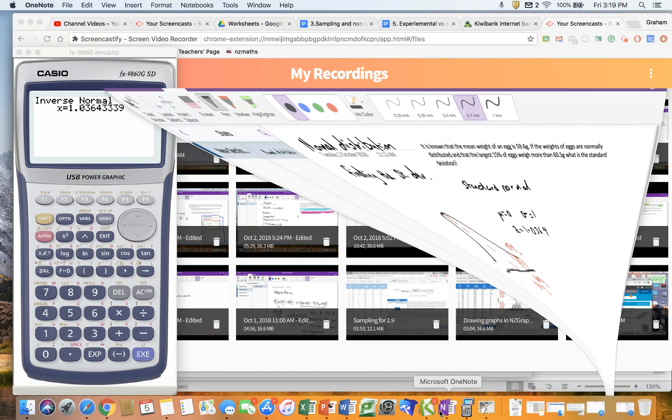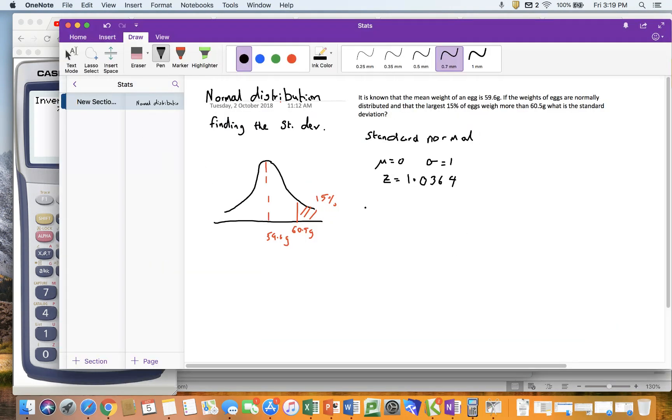Just closed the wrong window. So now at this point I'm going to say z equals x minus mu divided by standard deviation. At that point I can go, right, I know my mean is 59.6, I know my x is 60.5, I know my z is 1.0364, so therefore the only thing that I don't know is my standard deviation.